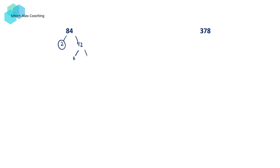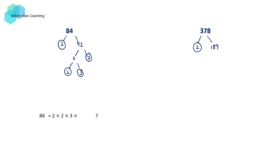We can use factor trees to help us find the prime factorization of numbers. 84 is equal to 2 times 42, 42 is equal to 6 times 7, and 6 is equal to 2 times 3.